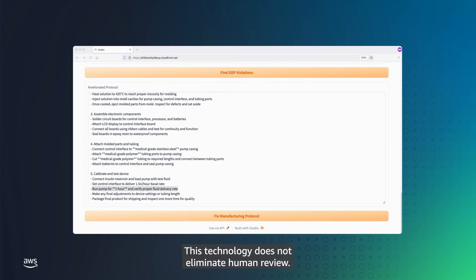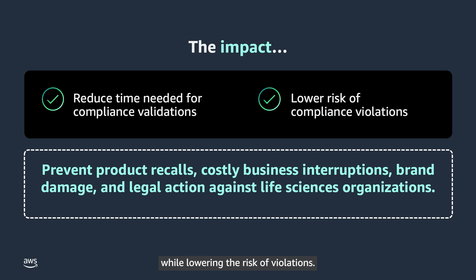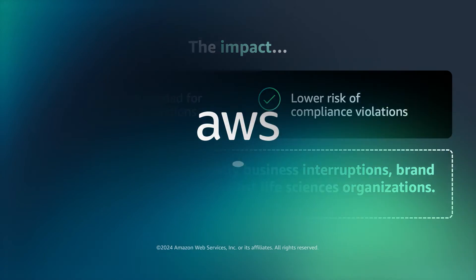This technology does not eliminate human review. Instead, it augments the human review, making it faster. Generative AI on AWS can reduce the time needed to perform compliance validation while lowering the risk of violations. This can help prevent product recalls, costly business interruptions, brand damage, and legal action against life sciences organizations.